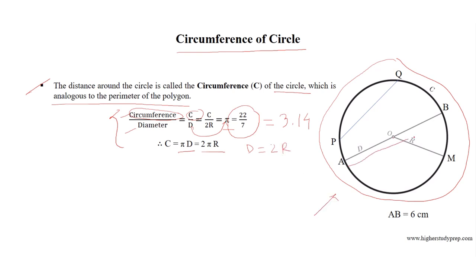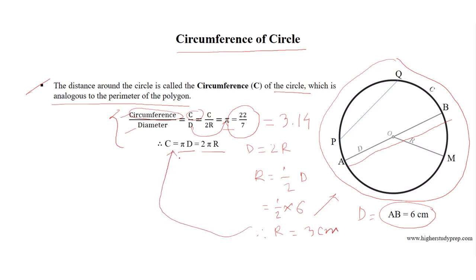For this circle, the diameter equals 6 centimeters, so D equals 6 cm. Therefore R equals half of D, which is half of 6, so the radius equals 3 centimeters. This helps us find the circumference of the circle. The circumference equals 2 times pi times 3, since R equals 3 cm, giving a circumference of 6 pi centimeters.